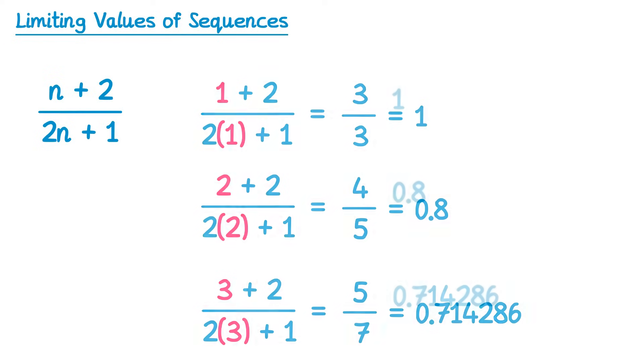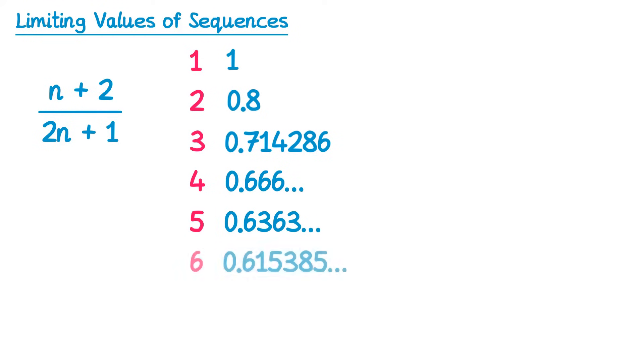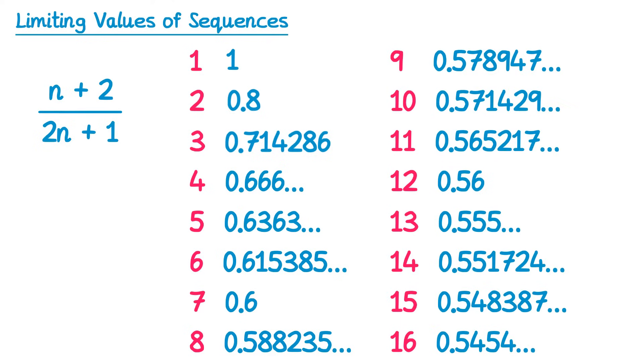Now I'll continue the sequence on for you. This would be the 4th, 5th, 6th, 7th, 8th, and another 8 terms all the way up to the 16th term would look like this. You can see we started at 1 and the numbers are getting smaller and smaller as we increase the value of n.